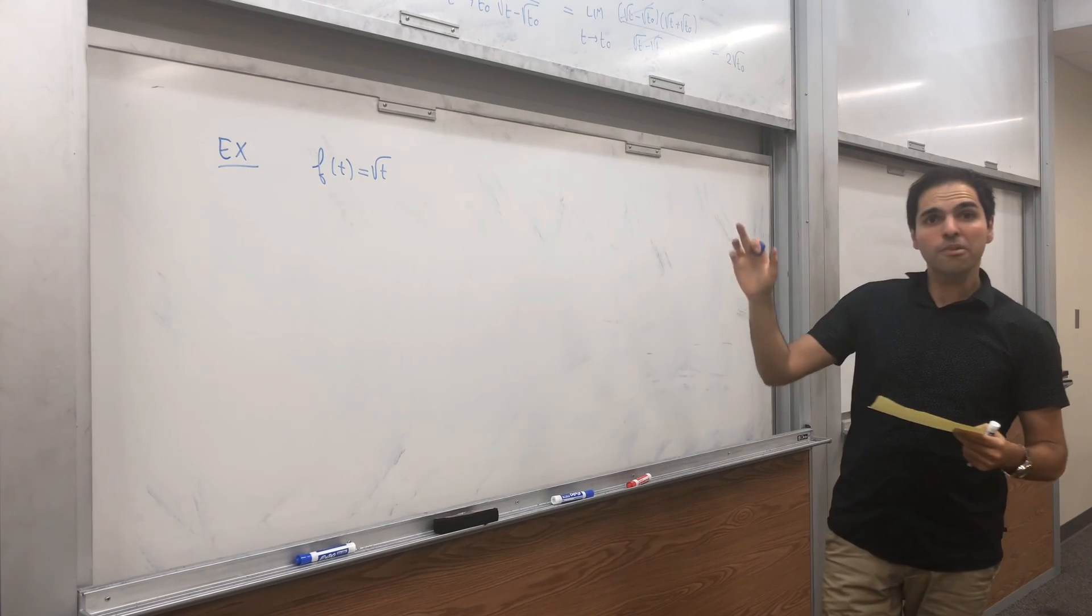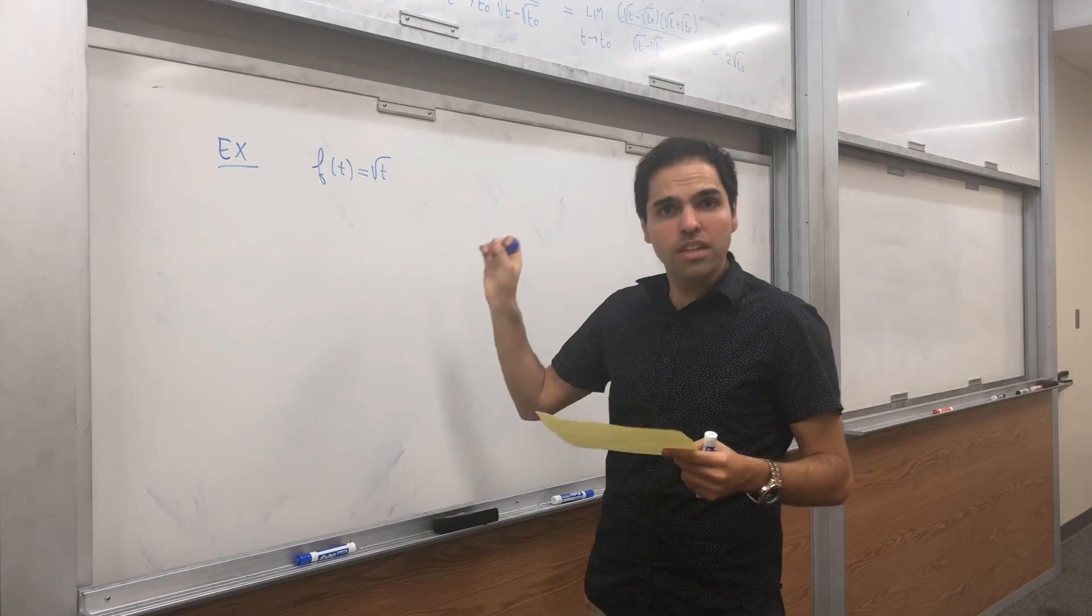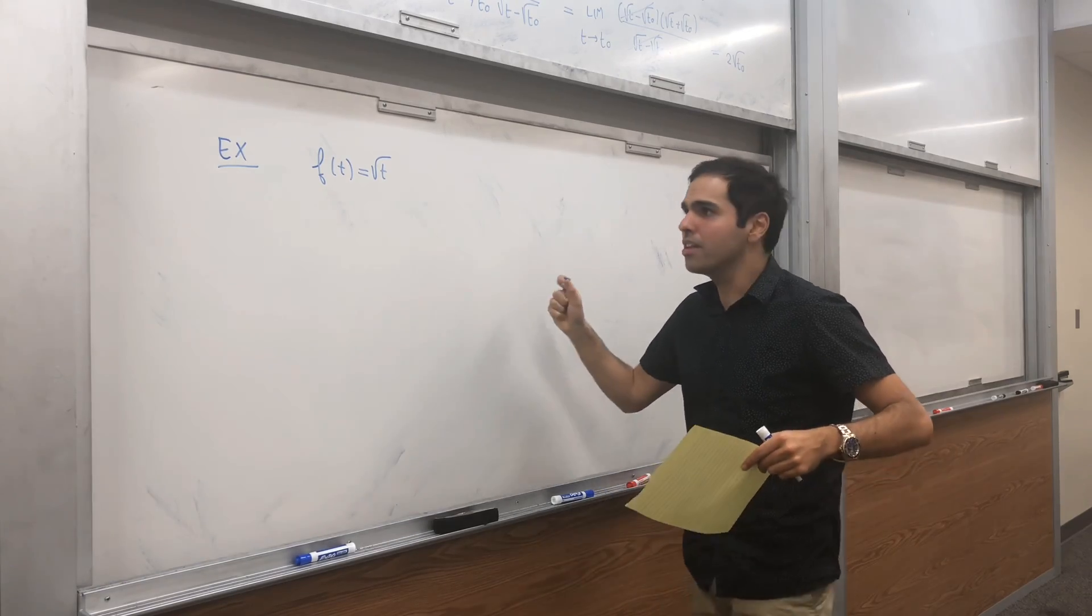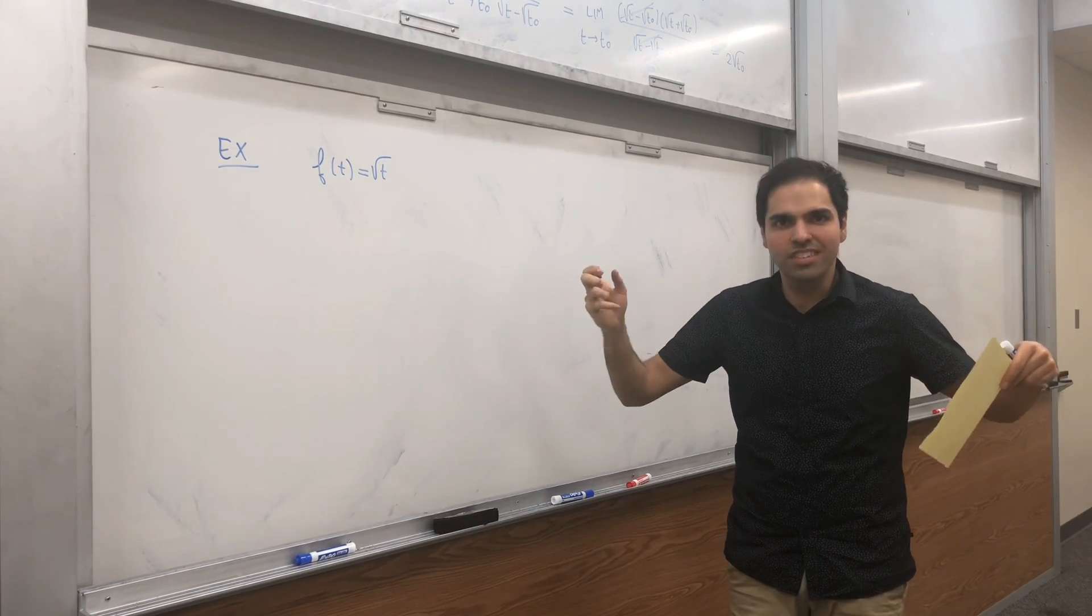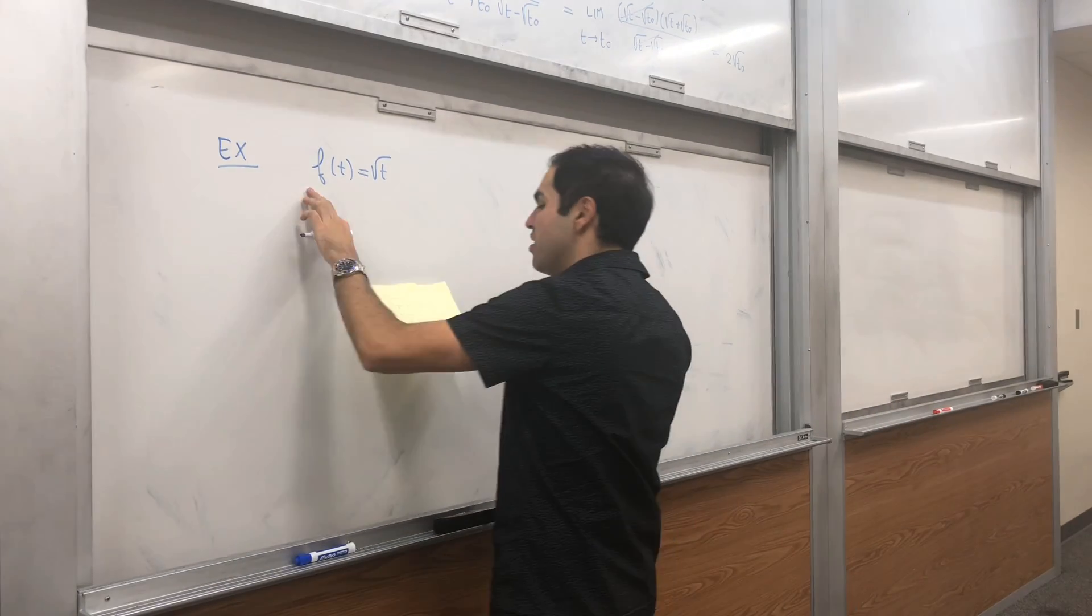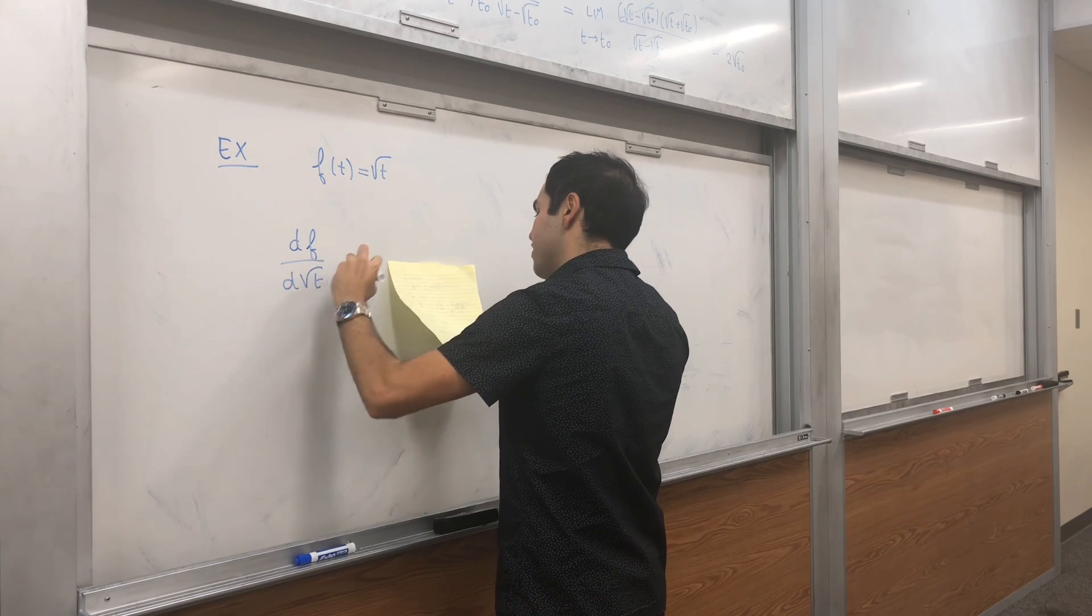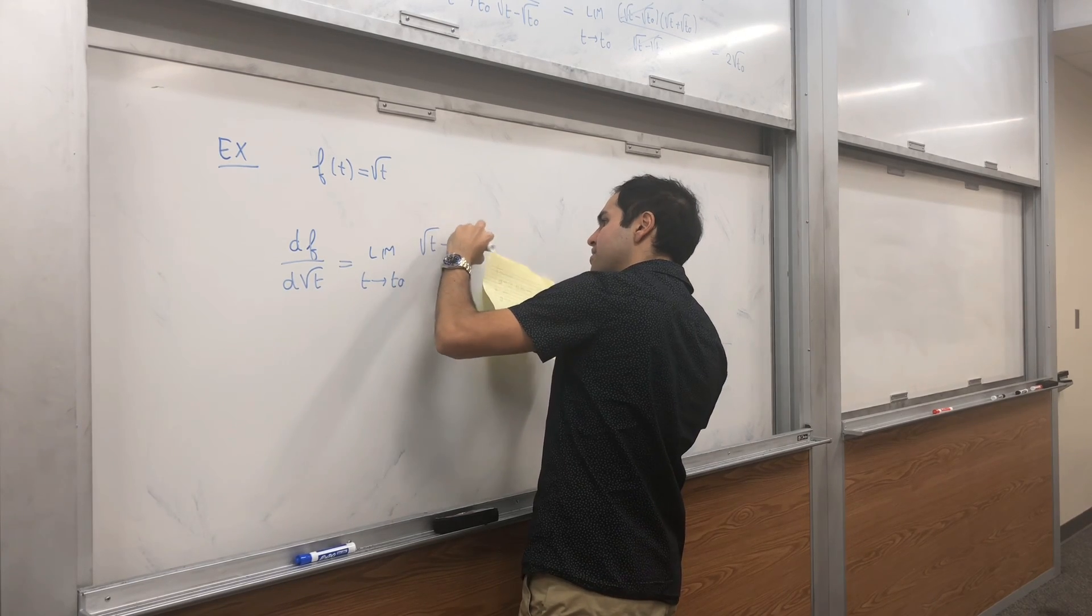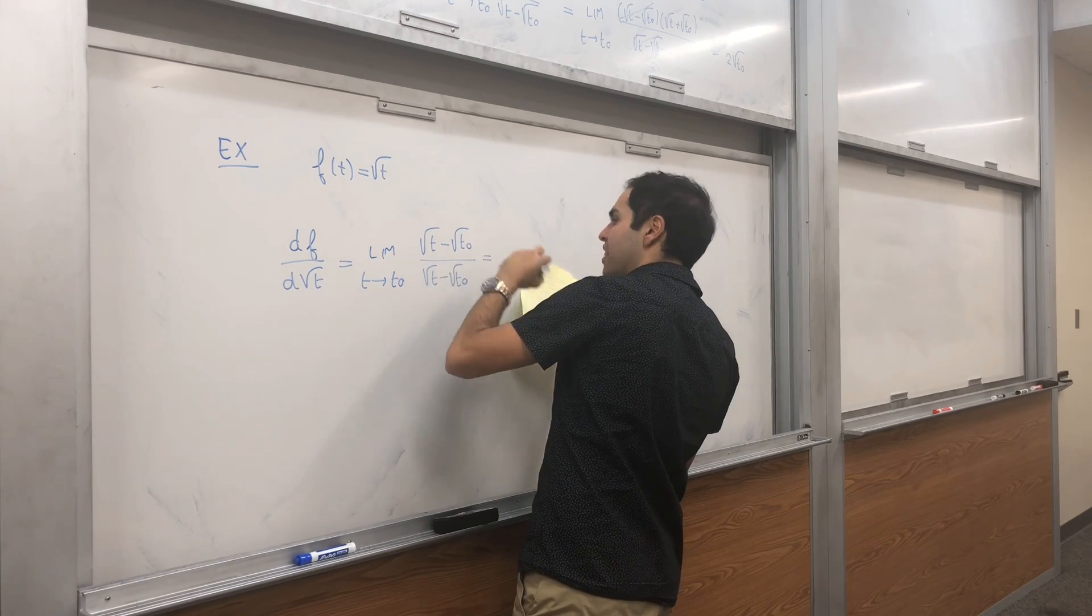Let's say f of t equals square root of t. And in particular, notice this function is not differentiable at zero. So, this square root derivative, it's good to deal with functions which are not differentiable at a point. Just like for Hausdorff measure, if you know that, sometimes a set might have measure zero, but a better Hausdorff dimension. So, in this case, let's do df over d square root of t. That's limit t goes to t naught of square root of t minus square root of t naught over square root of t minus square root of t naught. And that's just one.